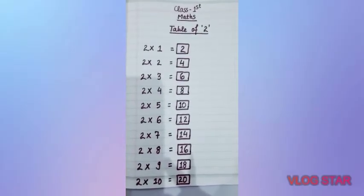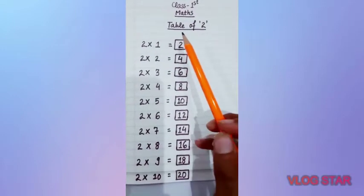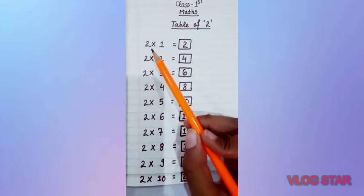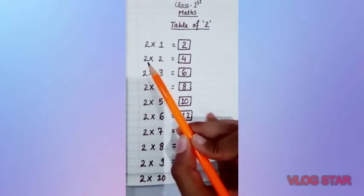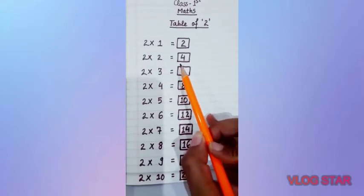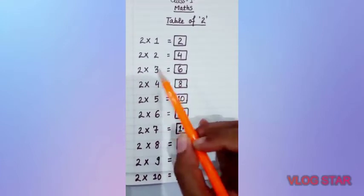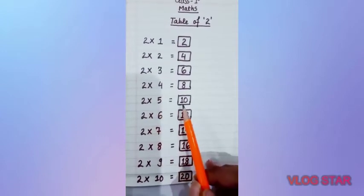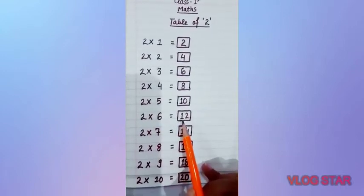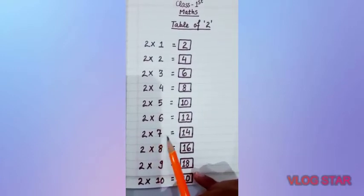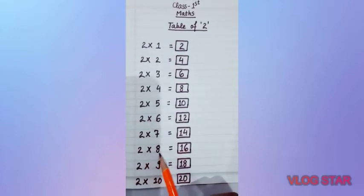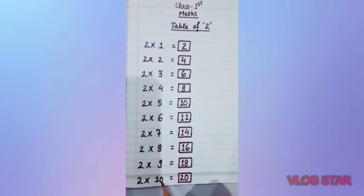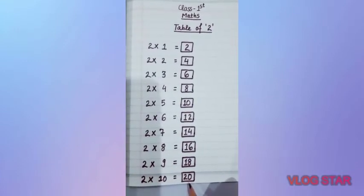Along with this we will also revise the table of 2 — ہم نے پہلے بھی 2 کا table کیا تھا، تو آج ہم پھر سے revise کرتے ہیں۔ 2 one ja 2, 2 two ja 4, 2 three ja 6, 2 four ja 8, 2 five ja 10, 2 six ja 12, 2 seven ja 14, 2 eight ja 16, 2 nine ja 18, 2 ten ja 20.